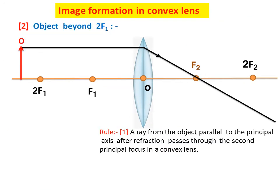The second situation is when the object is beyond 2F1. Here O is our object and it is beyond 2F1. From rule number 1, a ray from the object parallel to the principal axis, after refraction, passes through the second principal focus in a convex lens. We will use this first line in all six cases of image formation. Rule number 1 and rule number 2 will both be applicable in all six situations.